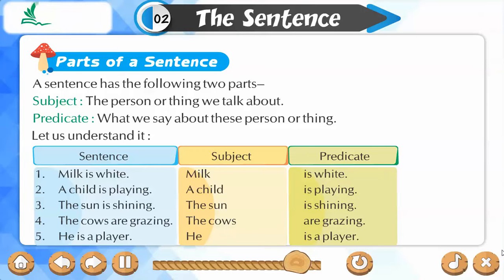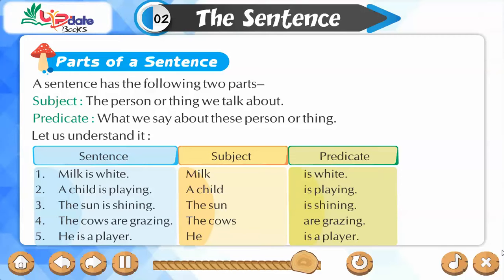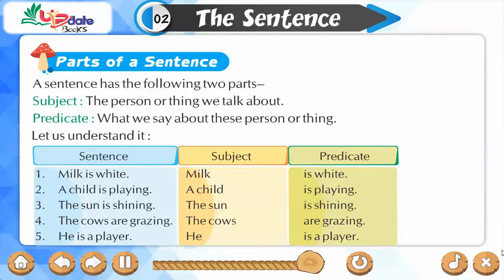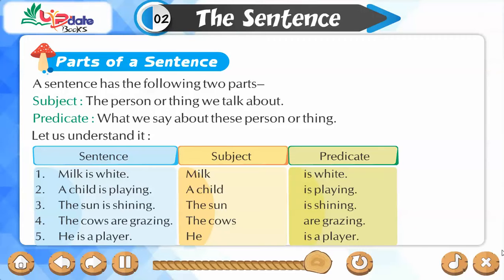3. The sun is shining. Subject: The sun. Predicate: is shining. 4. The cows are grazing. Subject: The cows. Predicate: are grazing. 5. He is a player. Subject: He. Predicate: is a player.